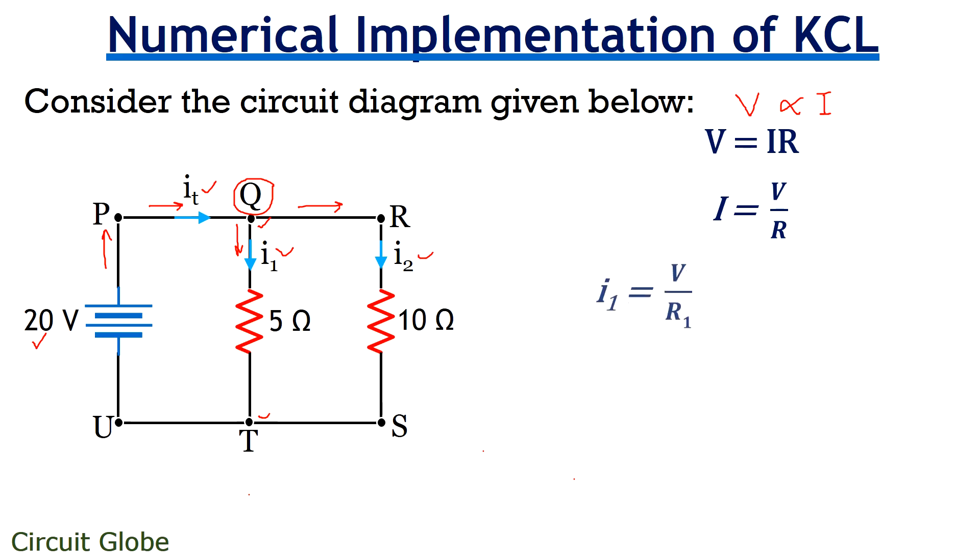So, for I1, we can write it as I1 is equals to V upon R1. R1 is this 5 ohm resistor. We all know that in parallel combination, potential difference across two points remain same. As we can see, the potential difference between P and U is 20 volts.